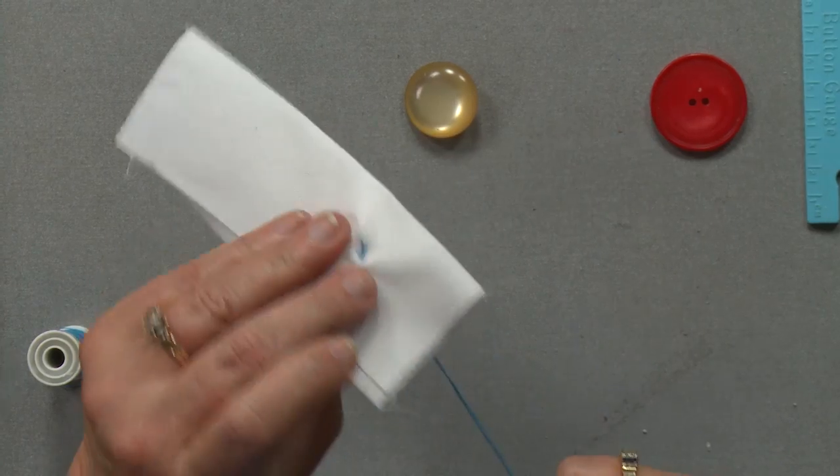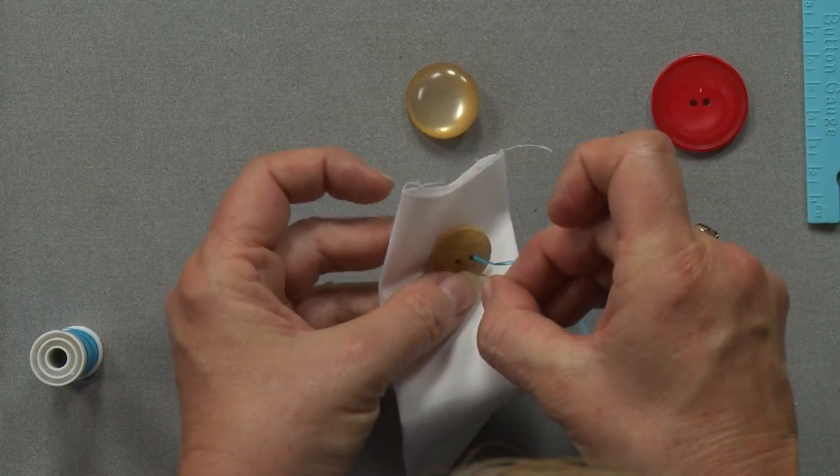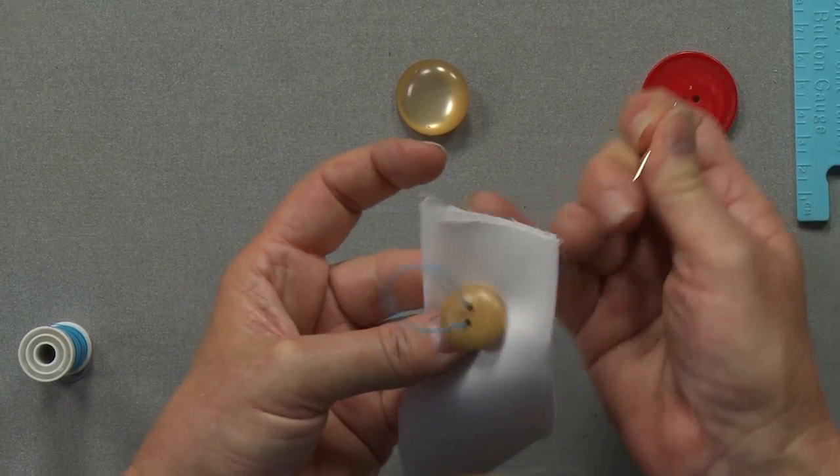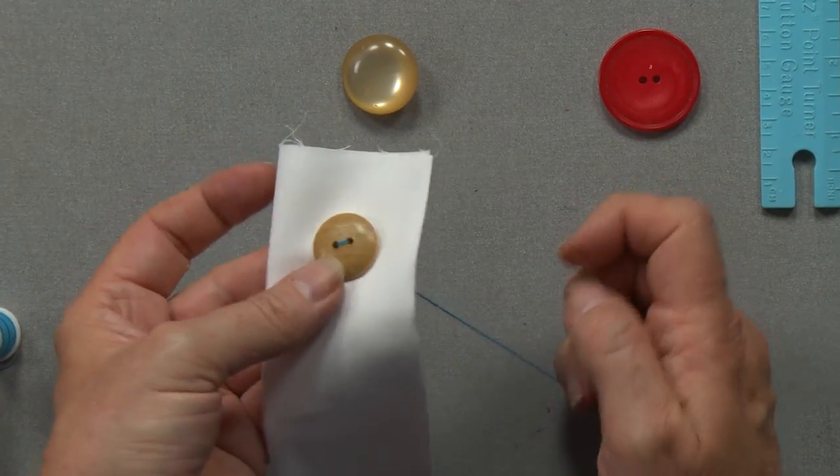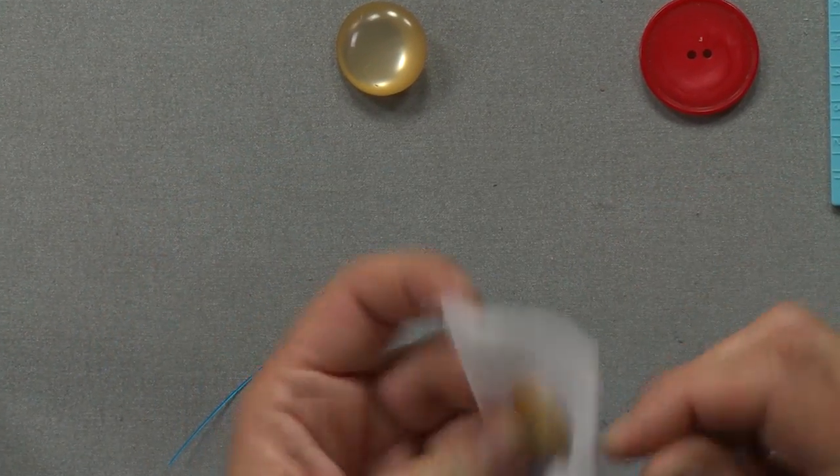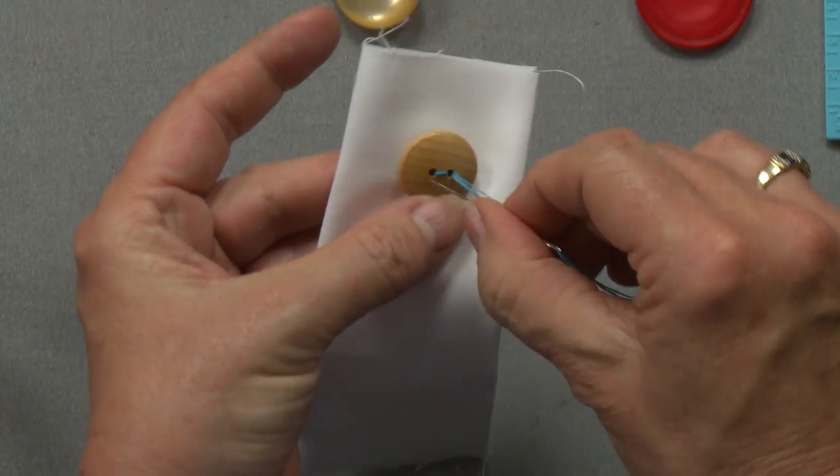Once I have that, I simply come here and remember I've got four threads, so I bring it up. My knot at the back will catch, and I'm using bright thread so you can see this. I'm going to come down here, and at that point in time, my button is sewed on with four threads. You could actually stop at this point.